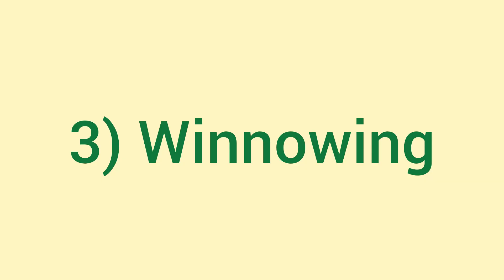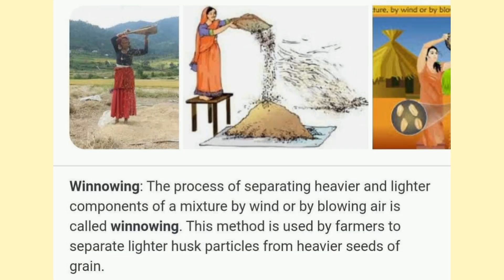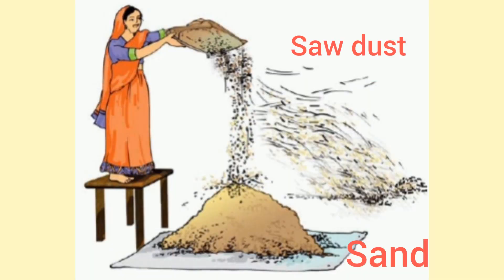The third method is winnowing. Winnowing is used to separate heavier and lighter components of a mixture by wind or blowing air. For example, separation of seeds from sand.